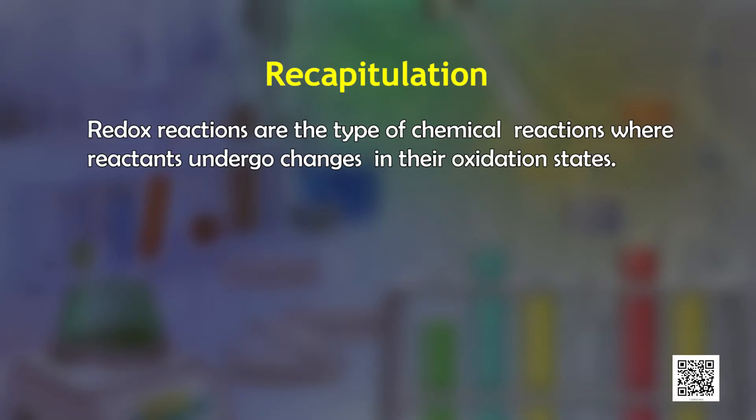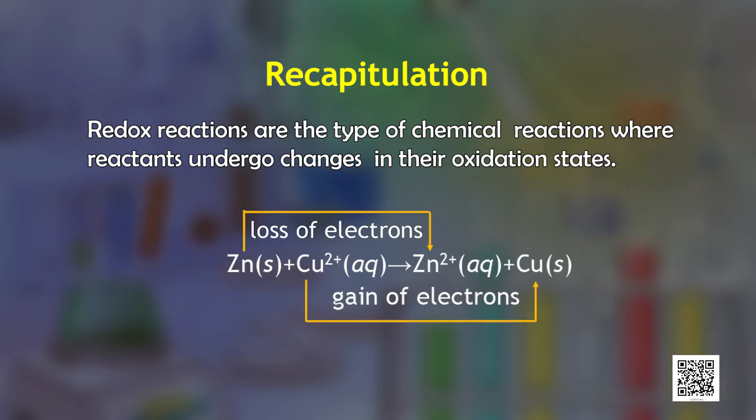We will begin this discussion with the recapitulation of our previous understanding about redox reactions. Redox reactions are the type of chemical reactions where reactants undergo changes in their oxidation states. For example, when zinc reacts with copper ions, we get zinc ions plus copper metal.